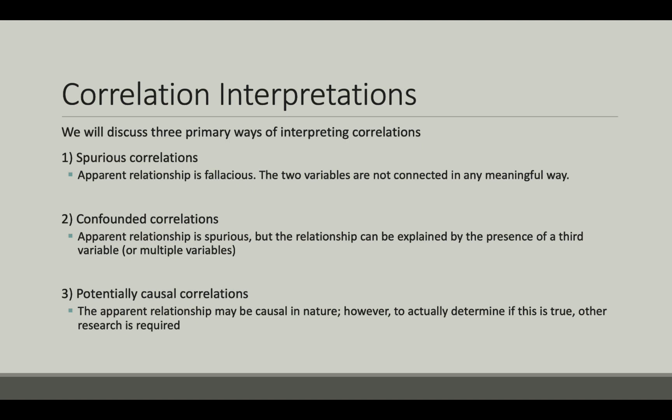Our first category will be spurious correlations. These are correlations in which the apparent relationship is false. In reality, the two variables are not related in a meaningful way that we know of, even if the r value is 0.9 — it does not mean that the two are connected. Our second category will be confounded correlations. These are correlations in which the apparent relationship is false, but the apparent relationship can be explained by the presence of a third variable, also called a confounding variable. Finally, our last category will be causal or potentially causal correlations. These are correlations which describe an actual causal relationship between two variables. However, the correlation or r value does not tell us this — we need to do other investigations to determine causality.